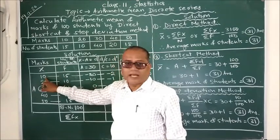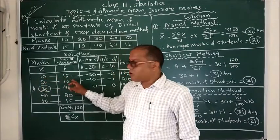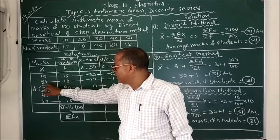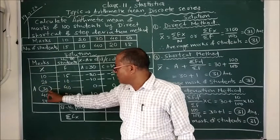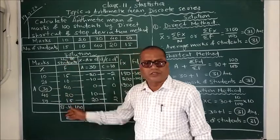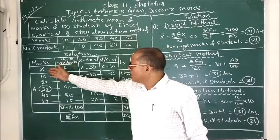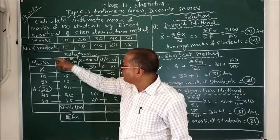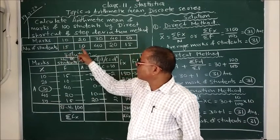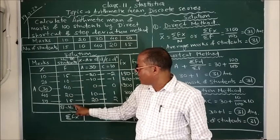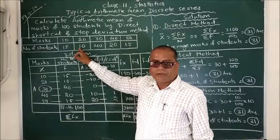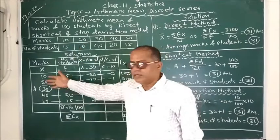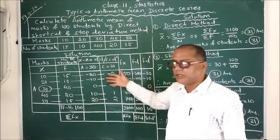Here value 10 occurs 15 times, value 20 occurs 10 times, value 30 occurs 40 times and so on. Here x is the marks or values and f is the frequency, both given in the question.